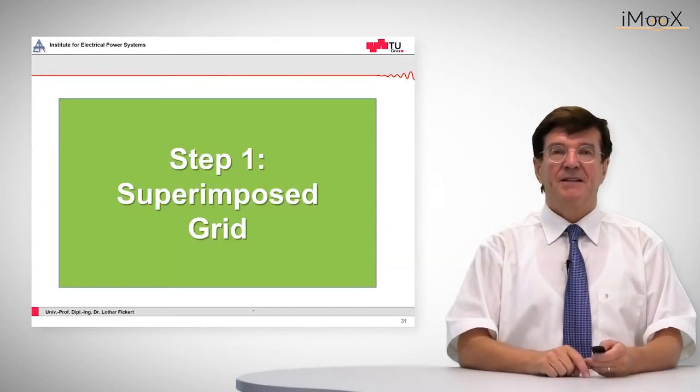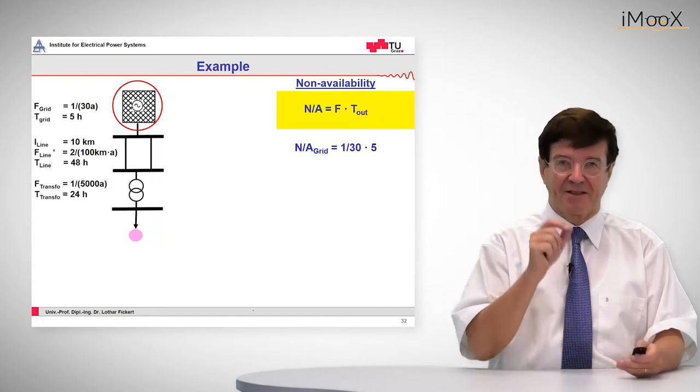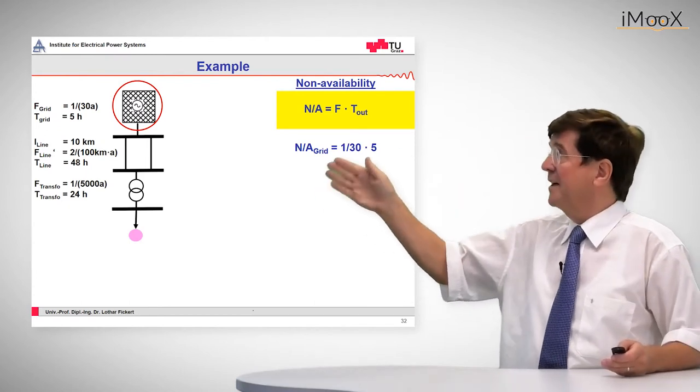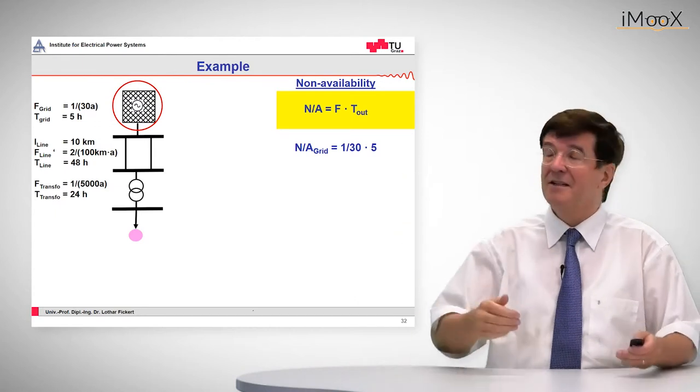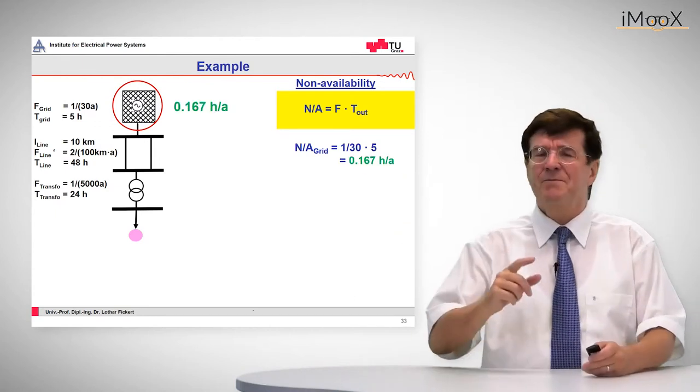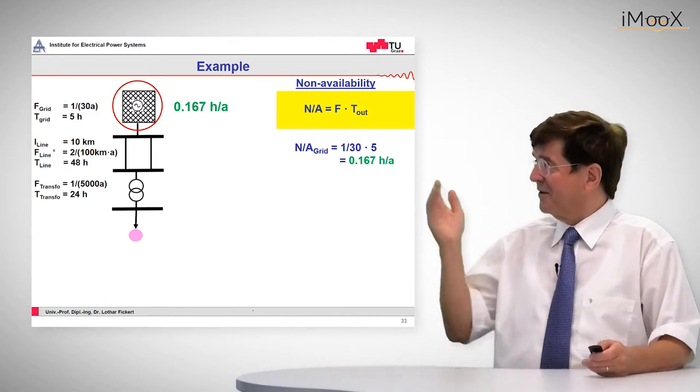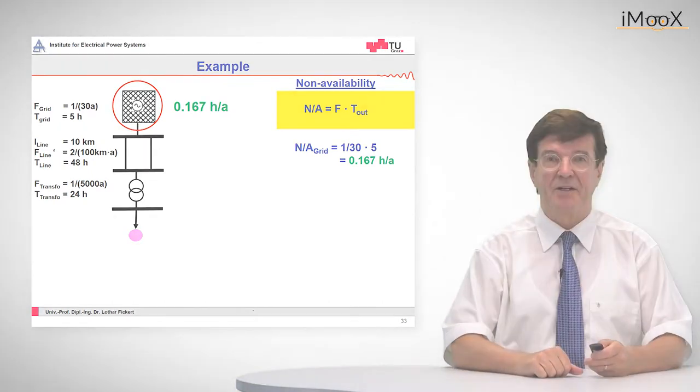The superimposed grid is given by the basic formula: non-availability is the product of frequency of occurrence of faults and the average outage time. This is 1 divided by 30 times 5, and the unit is hours divided by year. The non-availability is 0.167 hours per year.